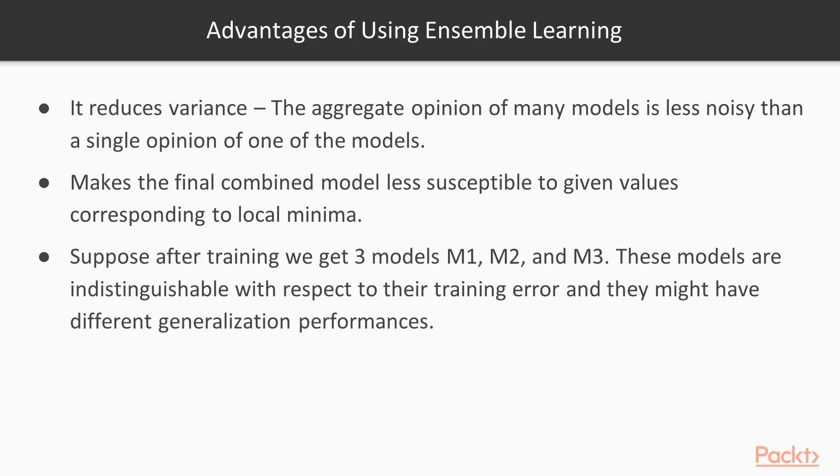Suppose after training, we get three models, M1, M2, and M3. Let's say these models are indistinguishable with respect to their training error, but they may have different generalization performance. So a safe option would be to use them all and average their outputs.